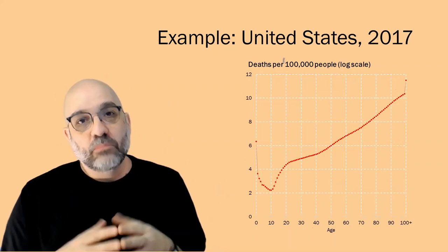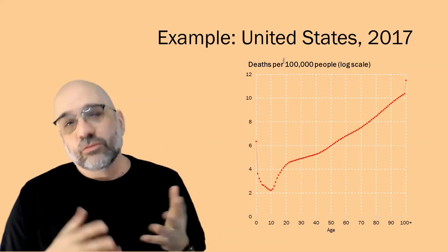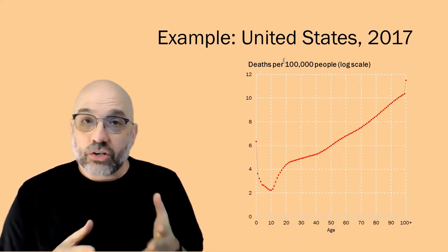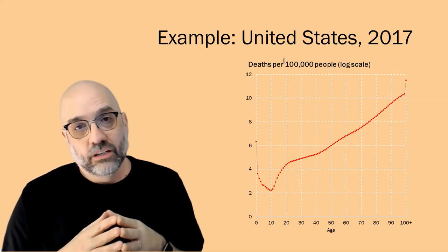For our example, we'll start with the mortality rates for every age in the United States in 2017. I've converted the death rates to a log scale here so we can see the fine differences at very low rates of mortality, which we have at young ages.